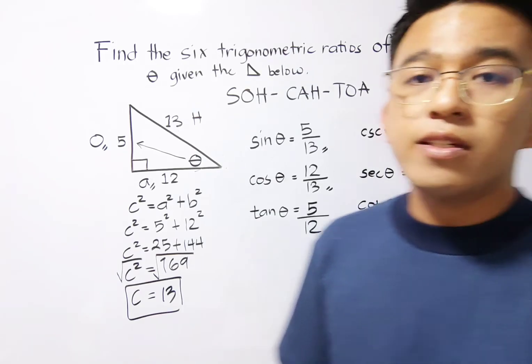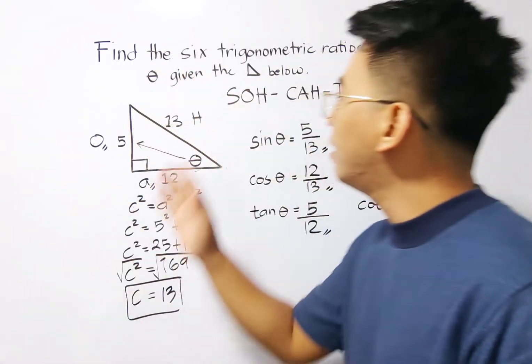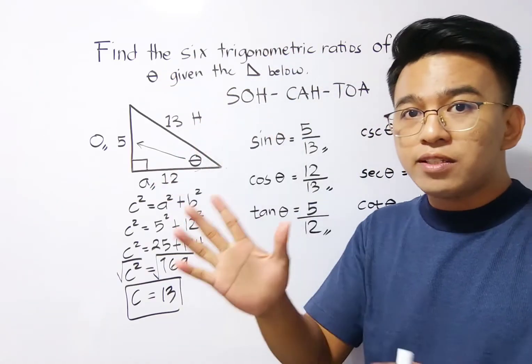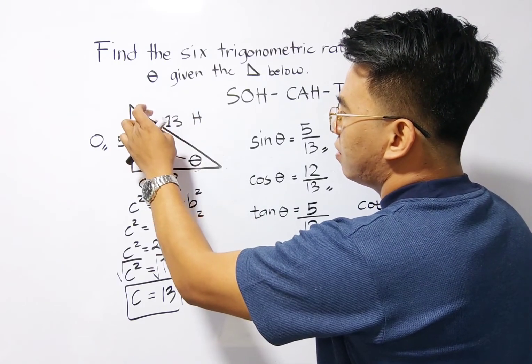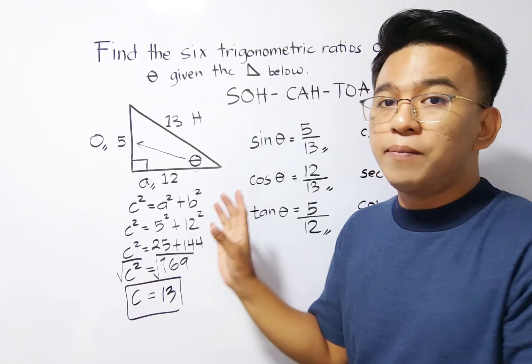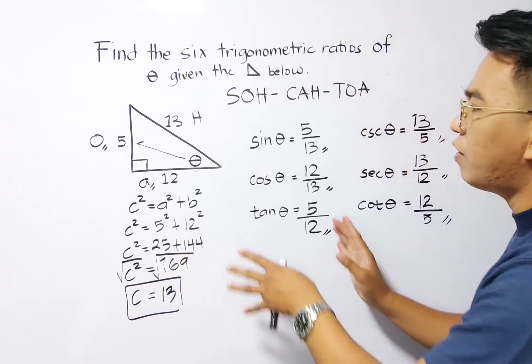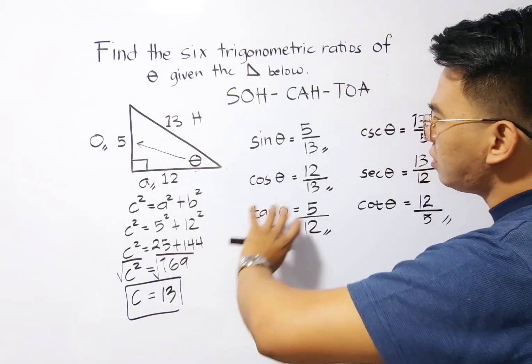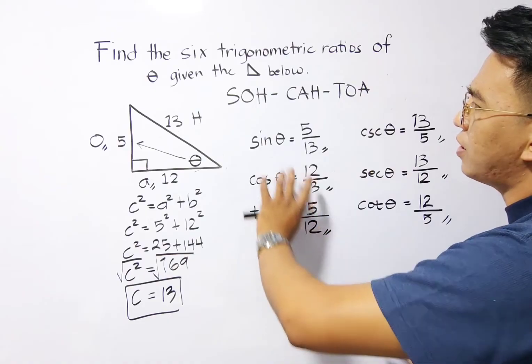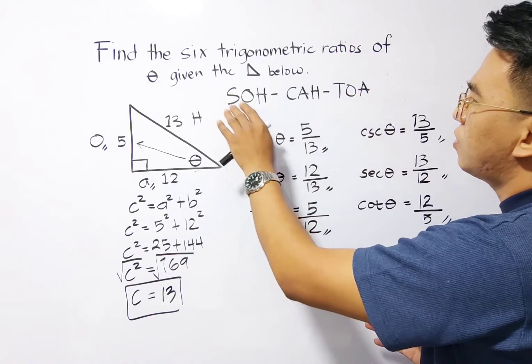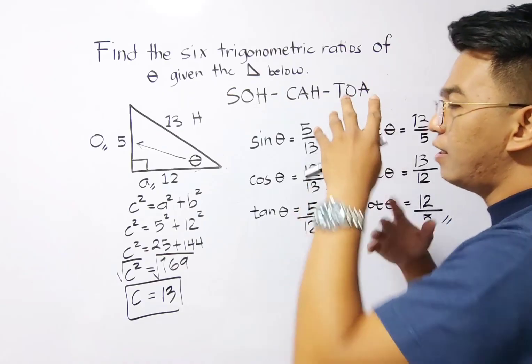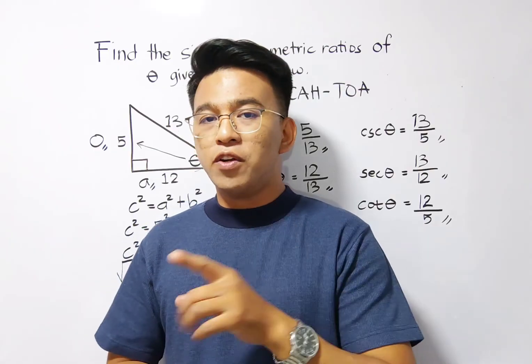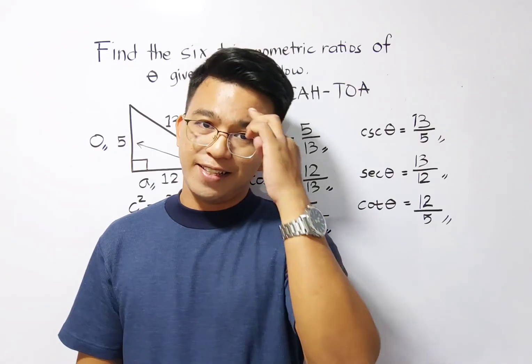That's it, guys. I hope you learned something from this video on how to find the six trigonometric ratios of theta given this triangle. At first, we need to find the hypotenuse, or we need to find one missing side using the Pythagorean theorem. Next, after figuring out the value of your three sides, you can easily identify the six trigonometric ratios given this mnemonic: SOH-CAH-TOA. And that's it, guys. So again, I hope you learned something from this video. So if you're new to my channel, don't forget to like and subscribe. Bye bye!